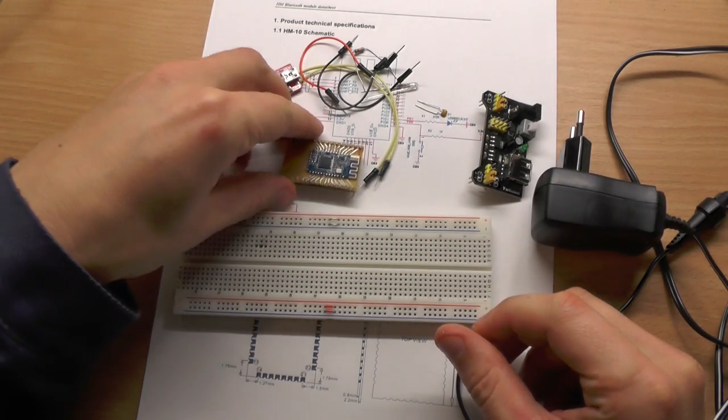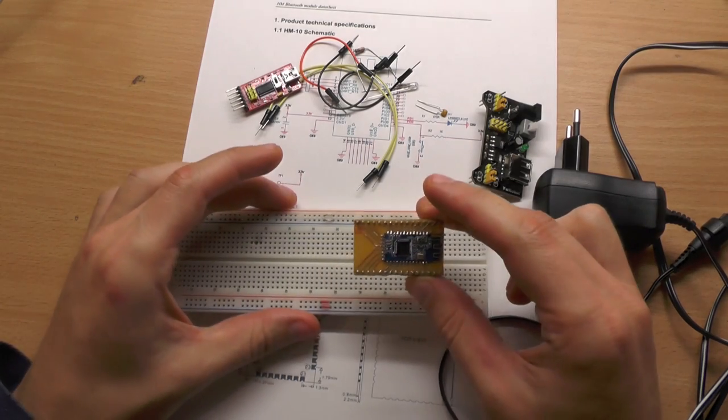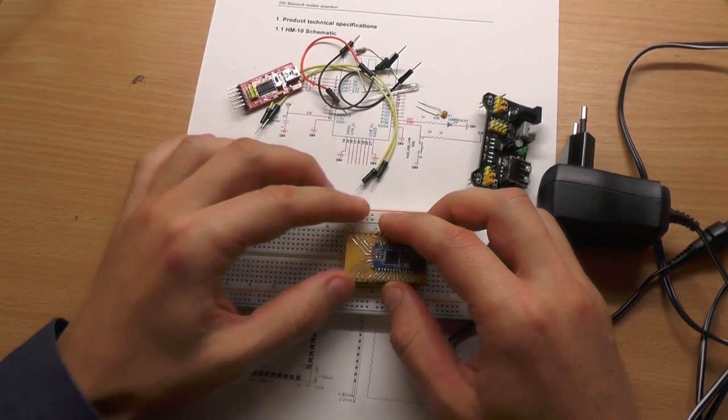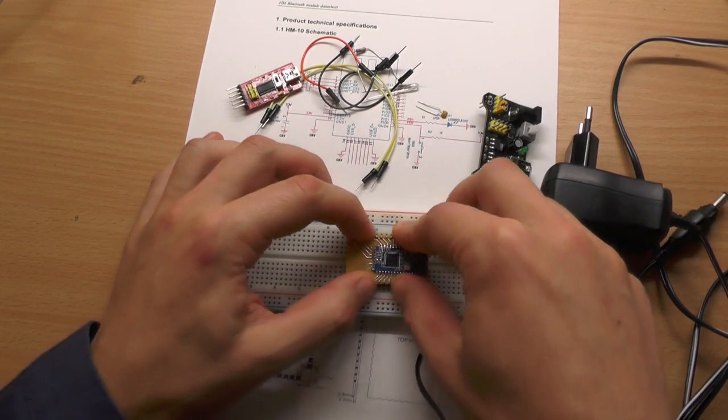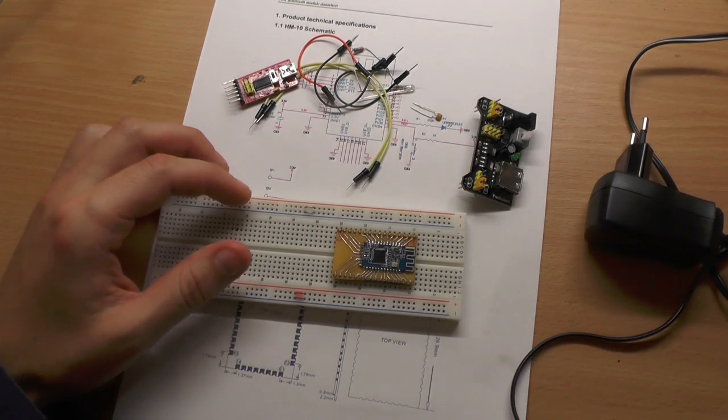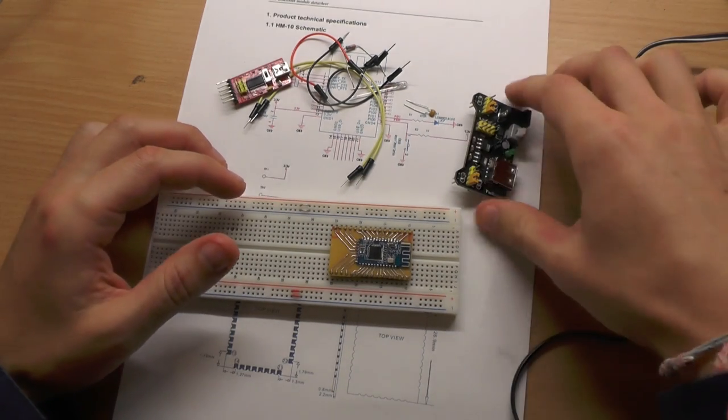There are just a few things that we will need to set up the serial connection to this module. We will place this module right here on the breadboard and then we need some kind of power.